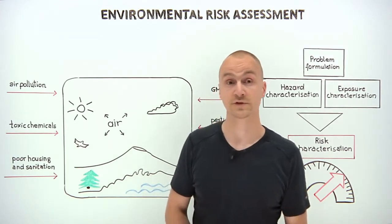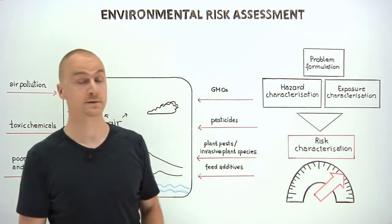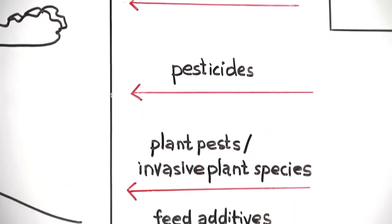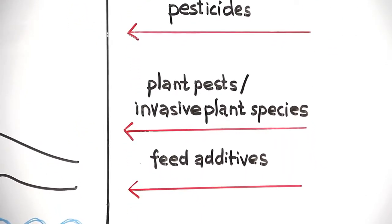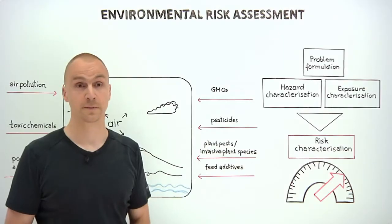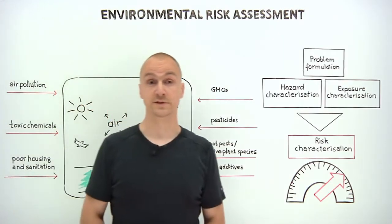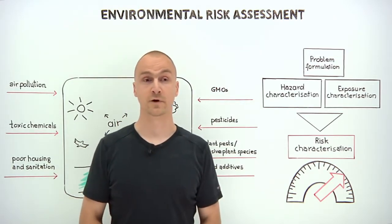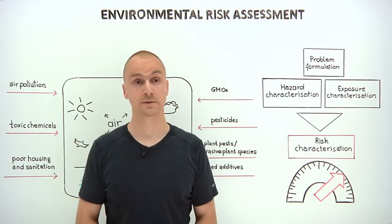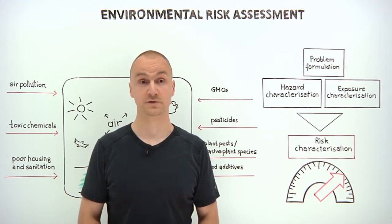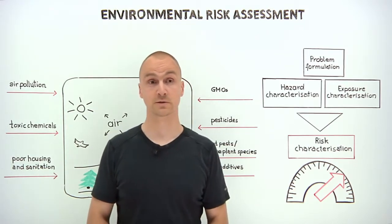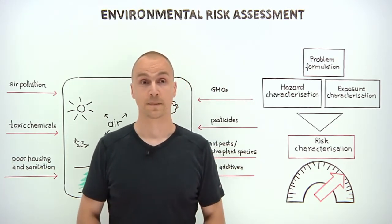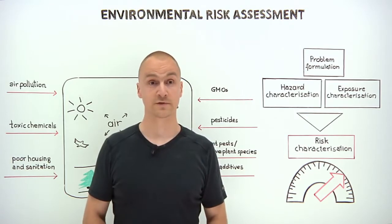EFSA performs environmental risk assessment in a number of areas, such as genetically modified organisms, pesticides, plant pests, invasive plant species and feed additives. The purpose of these assessments is to assess the seriousness and likelihood of harm to the environment, which might arise following a specific activity, such as the cultivation of a particular GM plant or the application of pesticides. These assessments follow several stages, beginning with problem formulation.